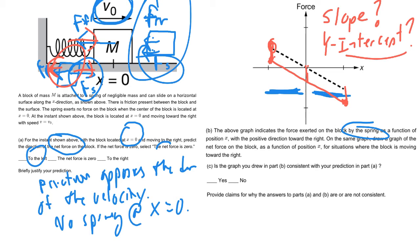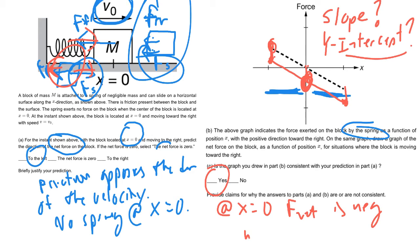Is the graph consistent with part A? In part A we said the force at x equals zero would be negative, or to the left. Looking at the graph, at x equals zero the net force is indeed negative. So the answer is yes — according to the graph, at x equals zero, the net force is negative, which means it points to the left.